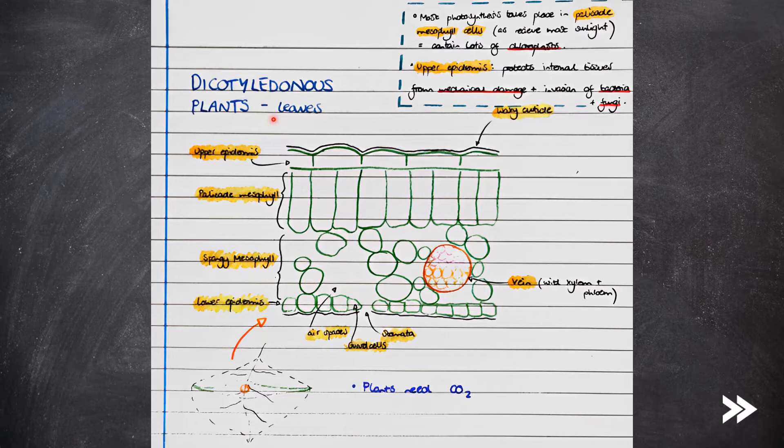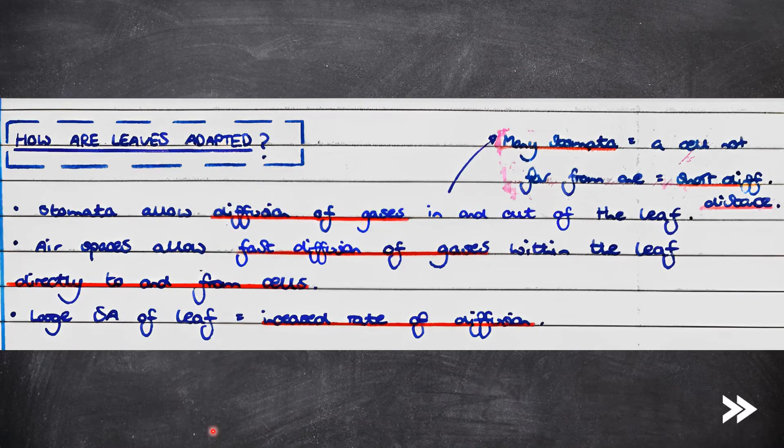Finally, the specification wants us to look at how the leaves of dicotyledonous plants are adapted for efficient gas exchange. Note that most photosynthesis takes place in the palisade mesophyll cells, as these receive the most sunlight. Therefore, they contain lots of chloroplasts. The upper epidermis protects internal tissues from mechanical damage and the invasion of bacteria and fungi. So, how are these leaves adapted? Stomata allow the diffusion of gases into and out of the leaf. The presence of many stomata means that a single cell is not far from one, which creates a short diffusion distance for gases to and from cells. Air spaces within the leaf allow the fast diffusion of gases directly to and from cells. And finally, the leaf has a large surface area, which also increases the rate of diffusion.